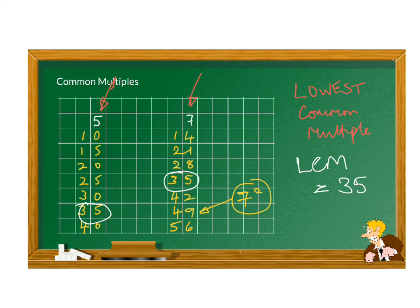This is also useful in fractions because we often talk about lowest common denominator. And in this case, if we were looking at fifths and sevenths, the lowest common denominator would be 35.